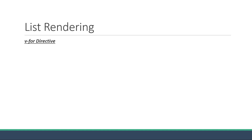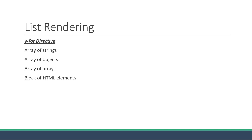We have a couple of scenarios to look at. We will see how to display an array of simple strings, an array of objects, an array of arrays, a scenario where each list item is a block of HTML elements, and finally how to work with object key-value pairs. There are plenty of examples to look at. Let's begin with a simple array of strings.